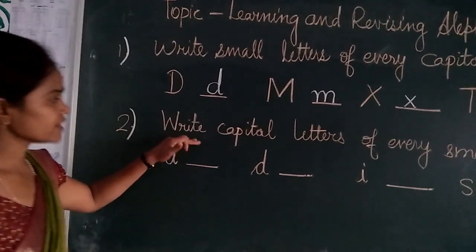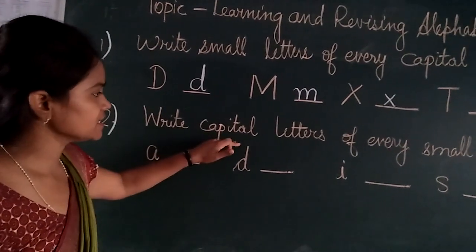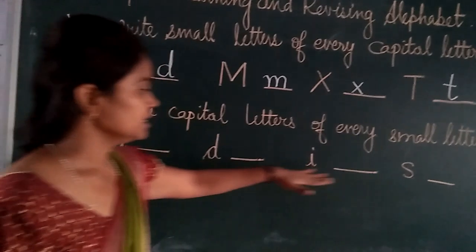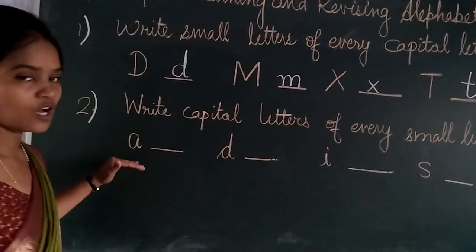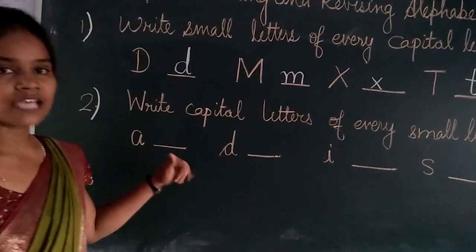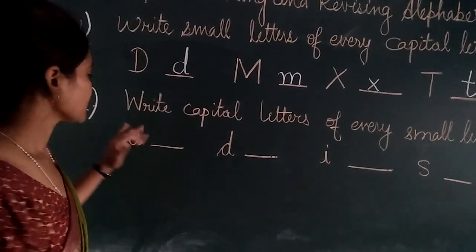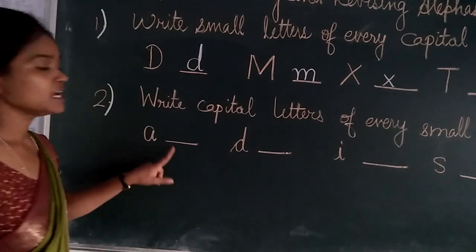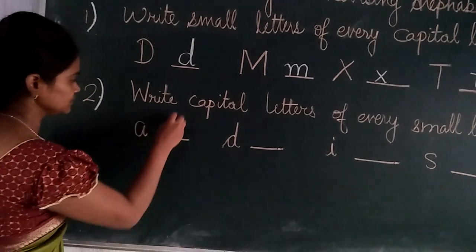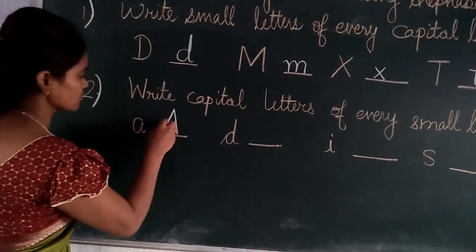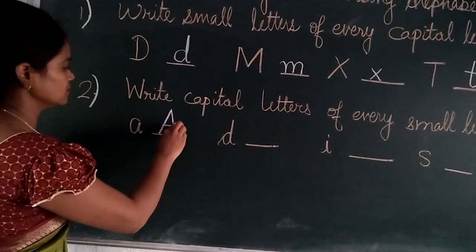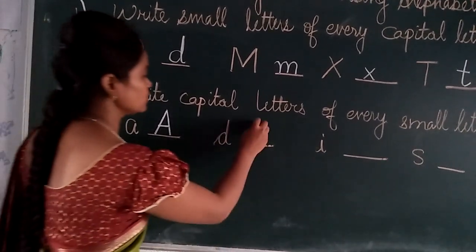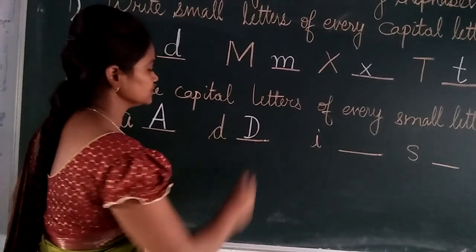Next exercise: write capital letters for every small letter. Here is given a small letter; we have to write a capital letter. Small A — now we will write capital A. Small D — now we have to write capital D.